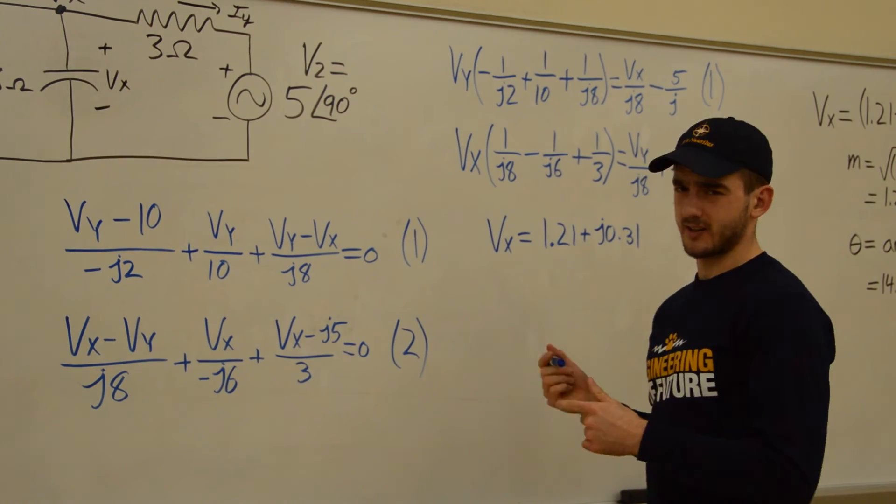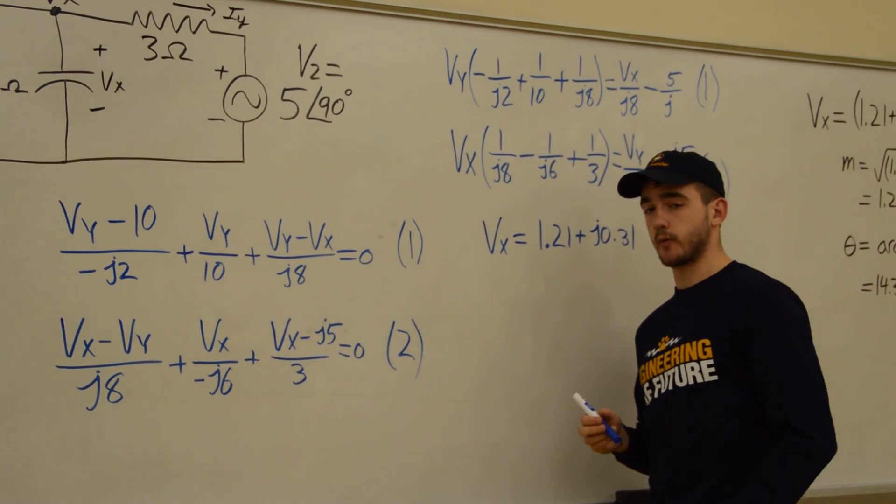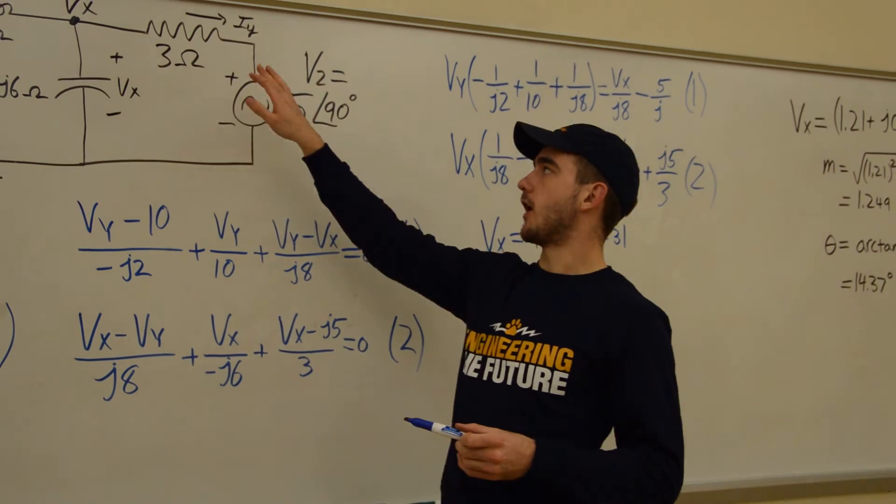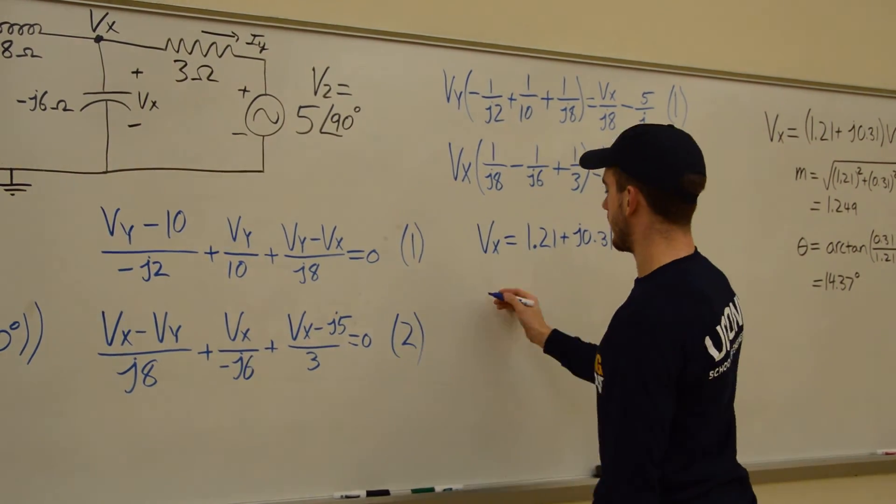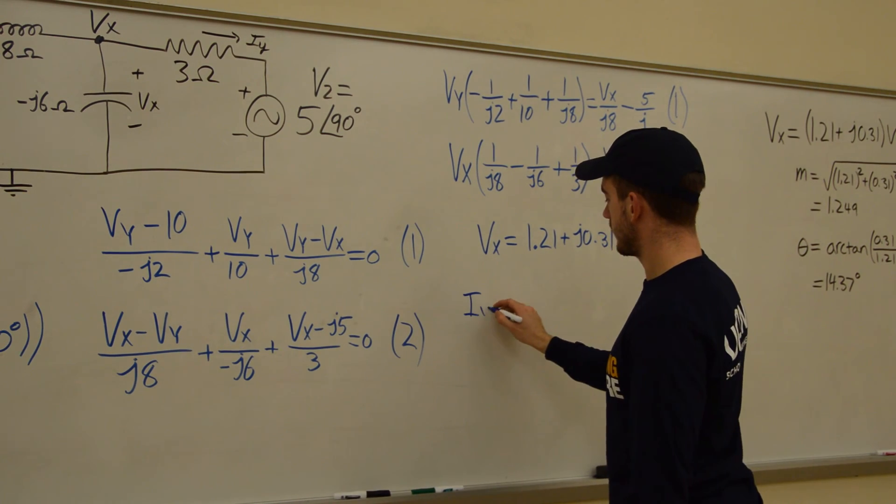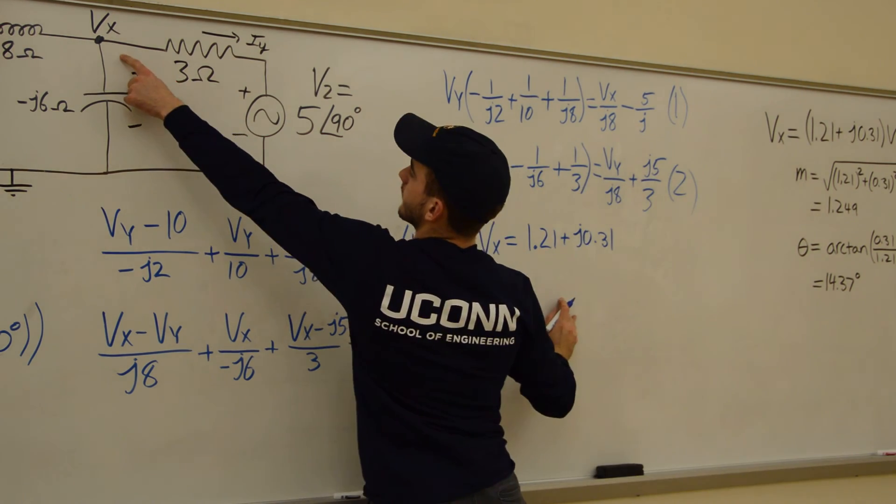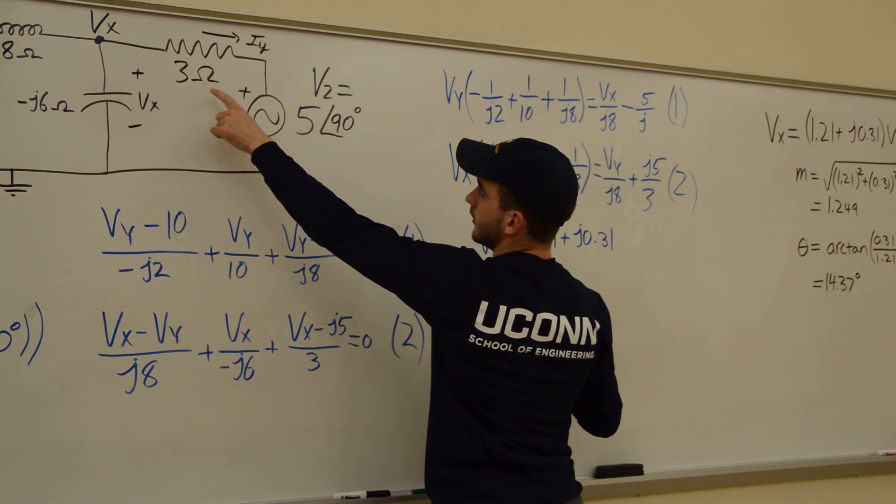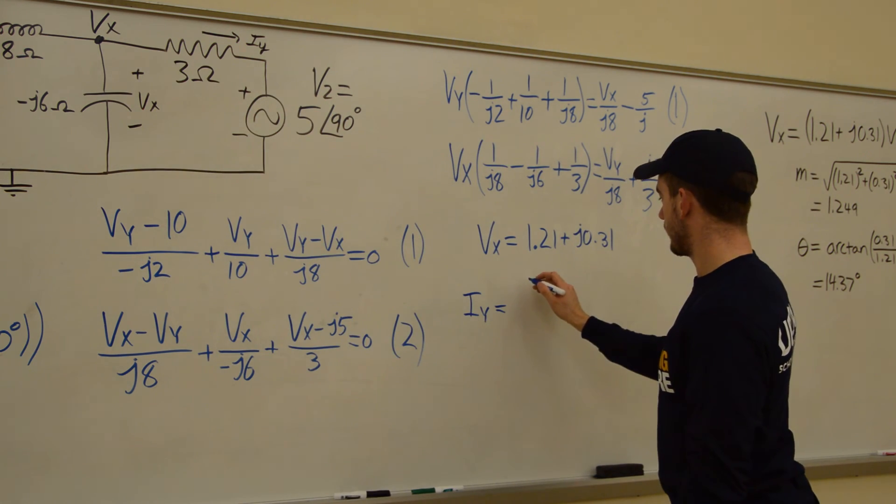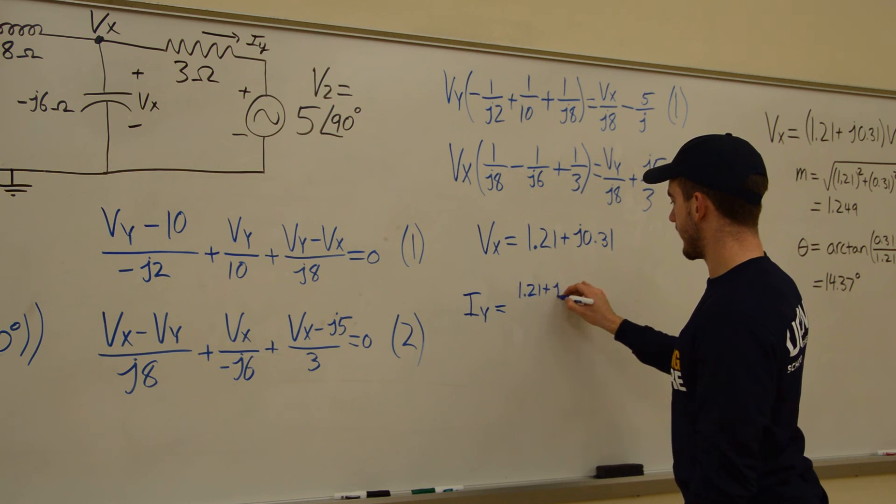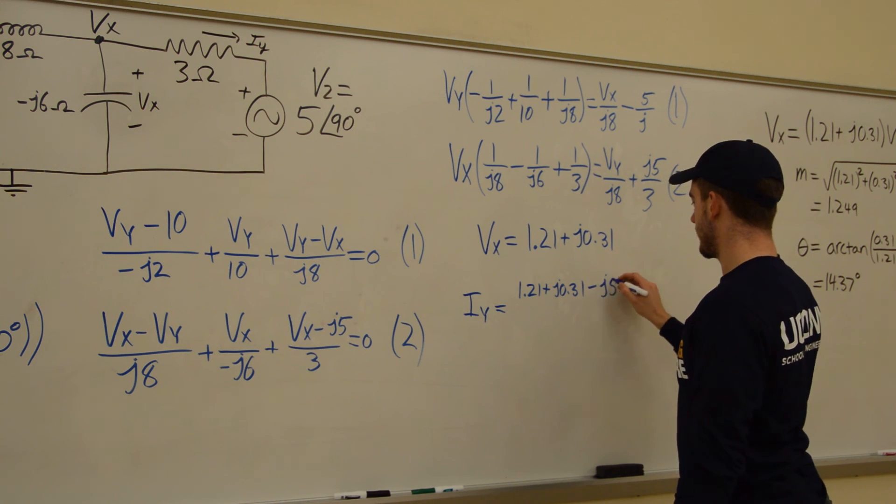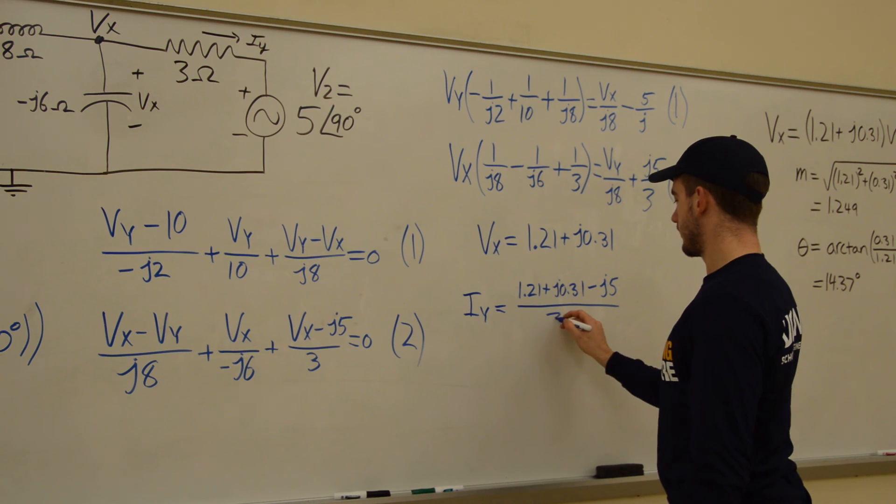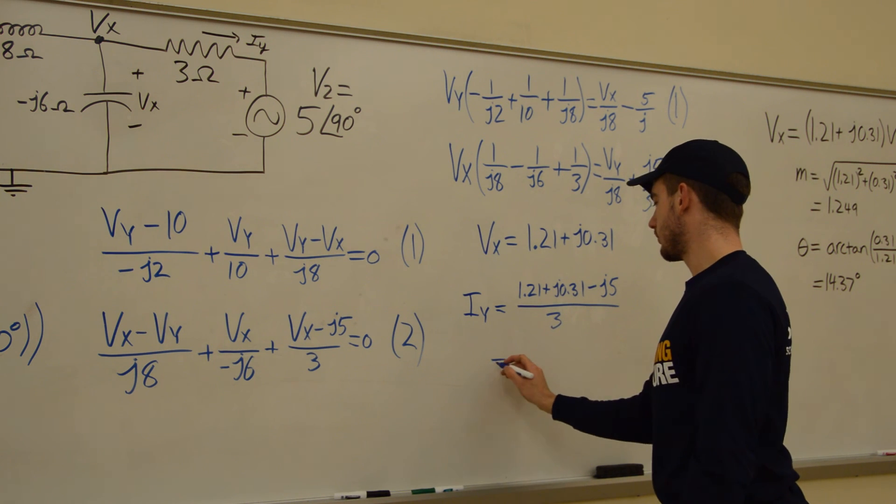And then, like I said, you can go back to that video to see how to convert this to polar form. And then once we want to solve for Iy, that's pretty straightforward. So we're going to have Vx, so Iy, equals Vx minus V2 over 3 ohms. So Vx, which is 1.21, plus J, 0.31, minus J5, which is V2, all over 3 ohms.